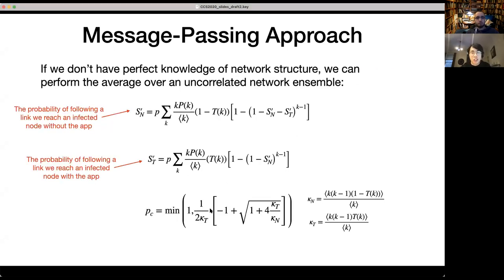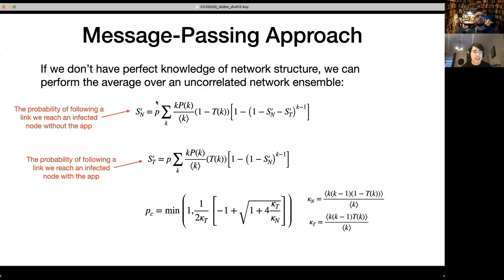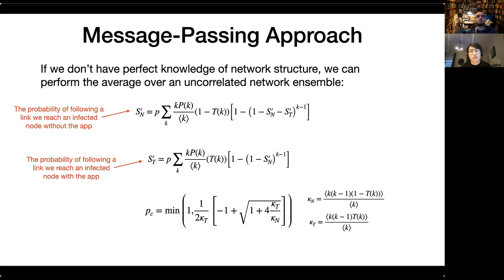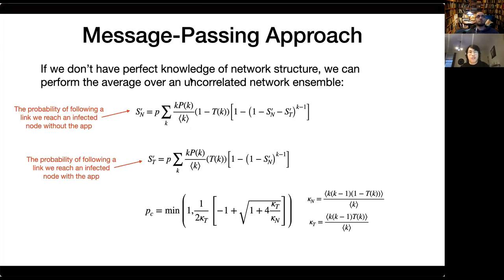Furthermore, if we don't have perfect knowledge of the network structure and want to average over an uncorrelated network ensemble, we write two equations: S_M_prime and S_T_prime. S_M_prime is the probability that following a link we reach an infected node without the app. In an uncorrelated network ensemble, for a link we reach a node with degree K with probability K*P(K) over average K, and this node doesn't have the app — term (1 minus T_K). S_T_prime is very similar. We use these expressions to obtain an analytical expression for the critical threshold PC, given by a simple formula involving Kappa_N and Kappa_T.